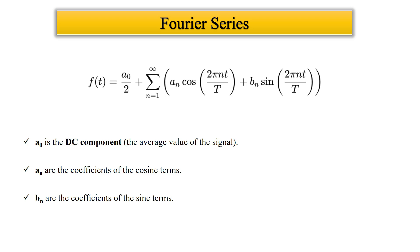The general form of a Fourier series is: f(t) = a-naught/2 + summation of aₙ·cos(2πnt/T) + bₙ·sin(2πnt/T). Here, a-naught is the DC component, or you can say the average value of the signal. aₙ is the coefficient of the cosine term and captures the even part of the signal. Similarly, bₙ are the coefficients of the sine terms and are used to capture the odd part of the signal. The infinite sum tells us that if we add enough sines and cosines with the right amplitudes, we can perfectly recreate any periodic signal.